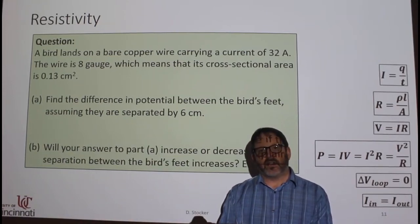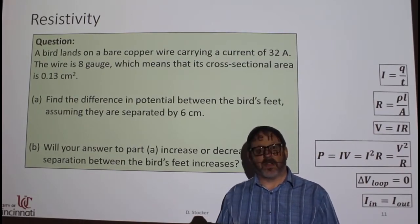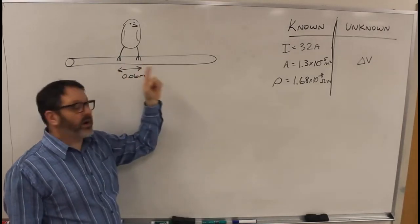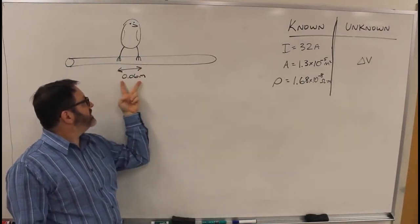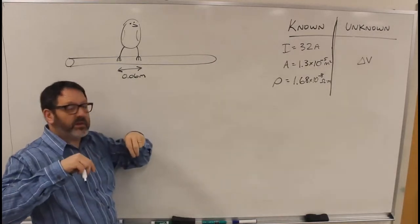In this video I'll find the electric potential difference between a bird's feet when it's sitting on a metal wire. So here I've drawn a bird sitting on a copper wire. I drew the dimension in here 0.06 meters. That's the distance between the bird's feet.